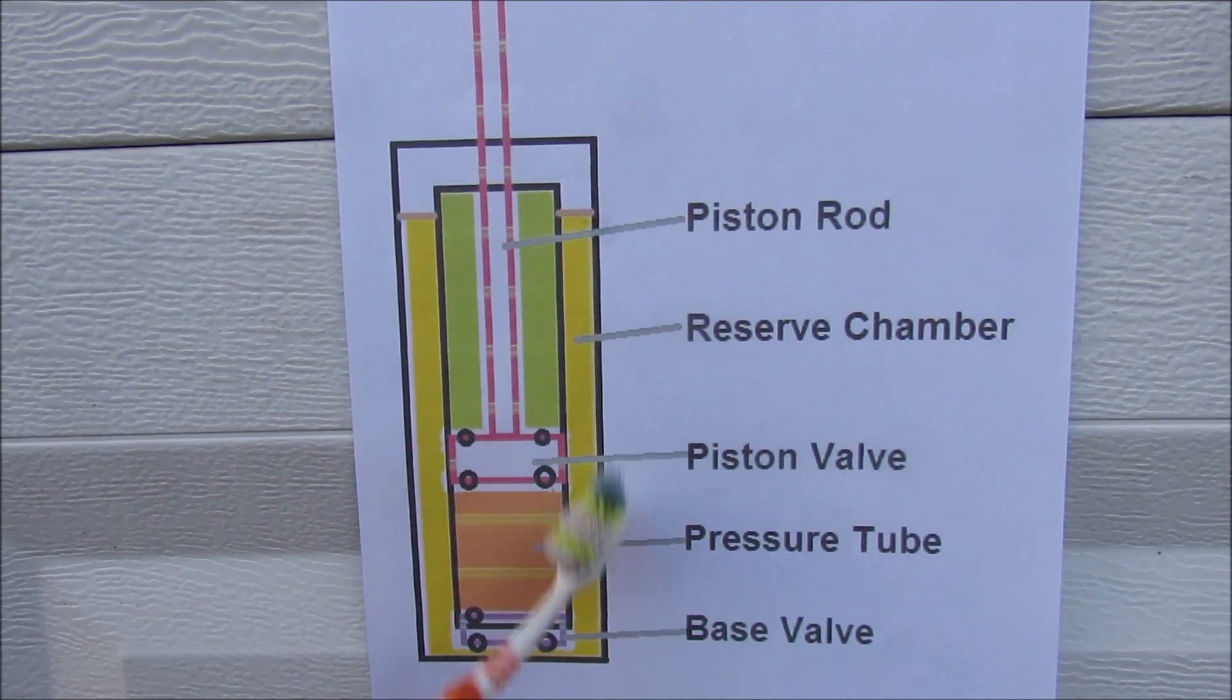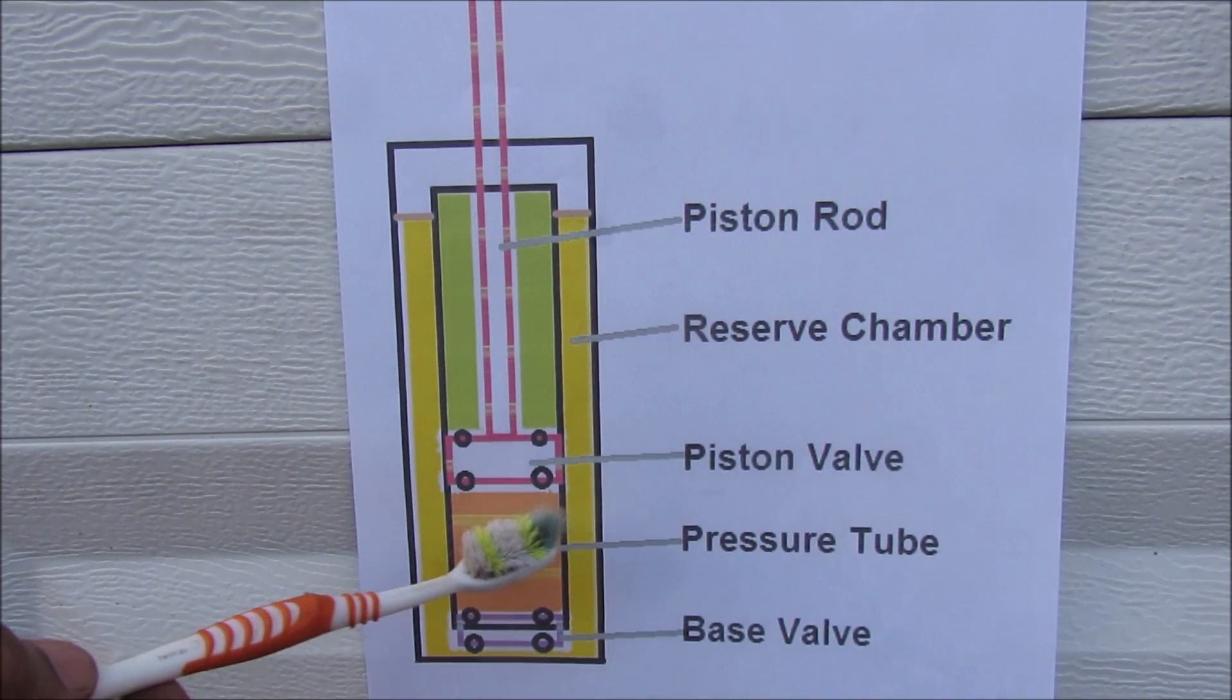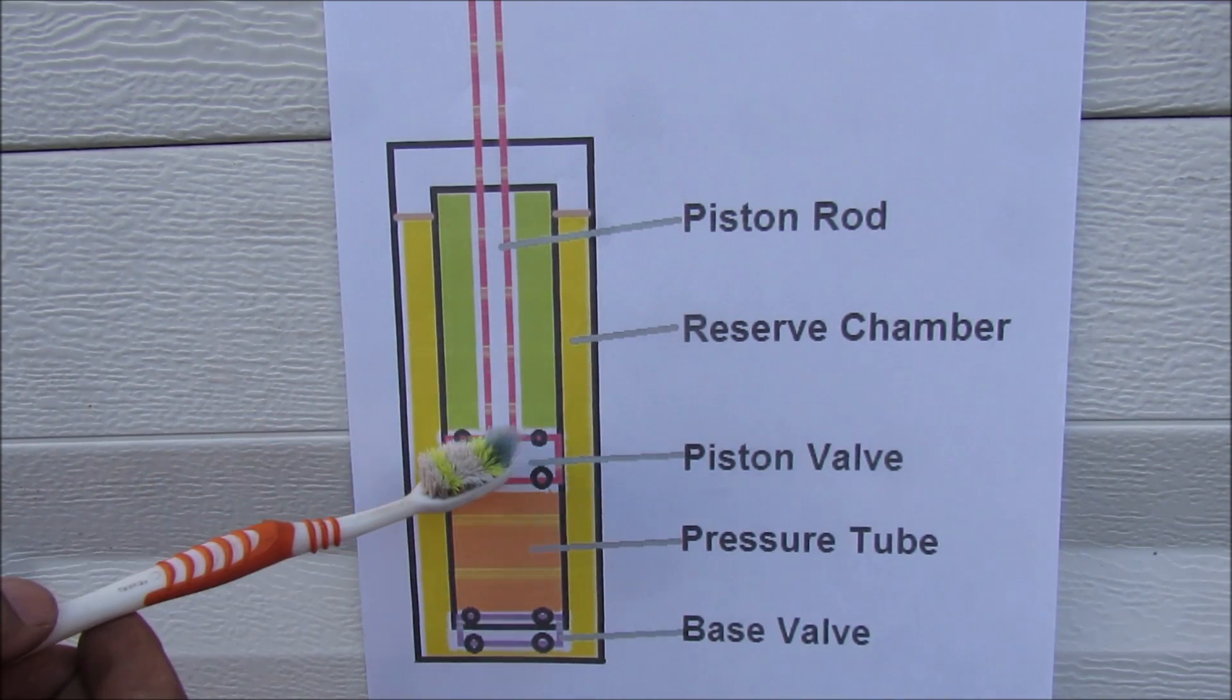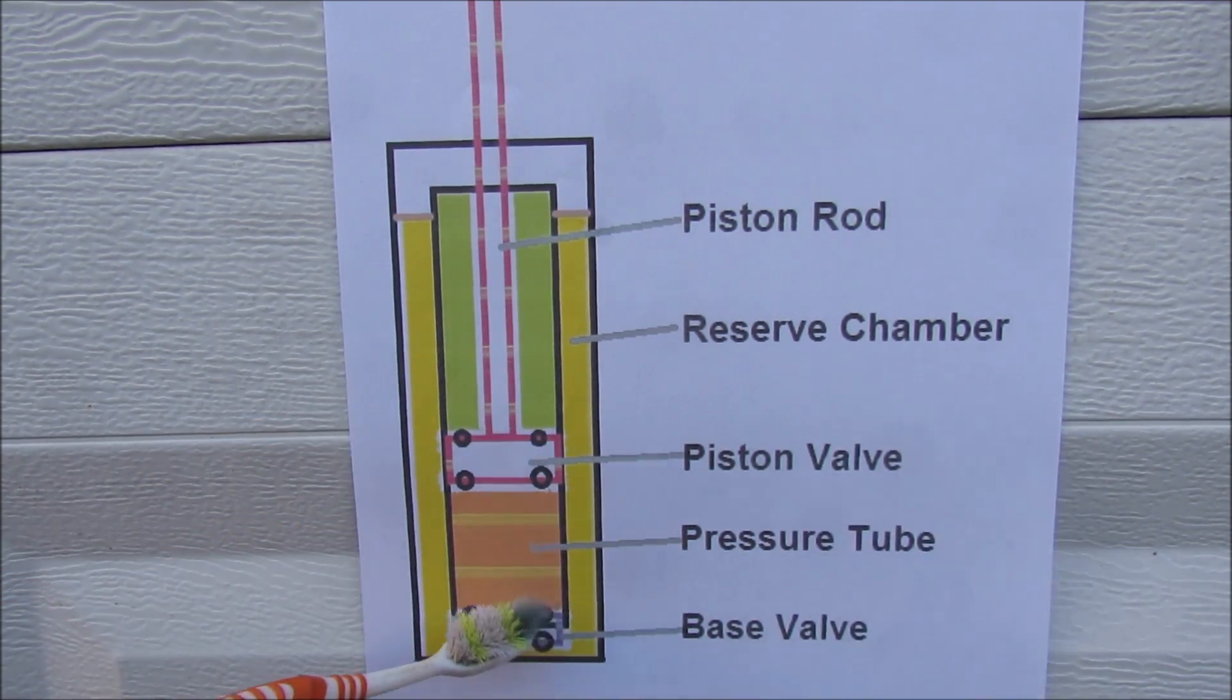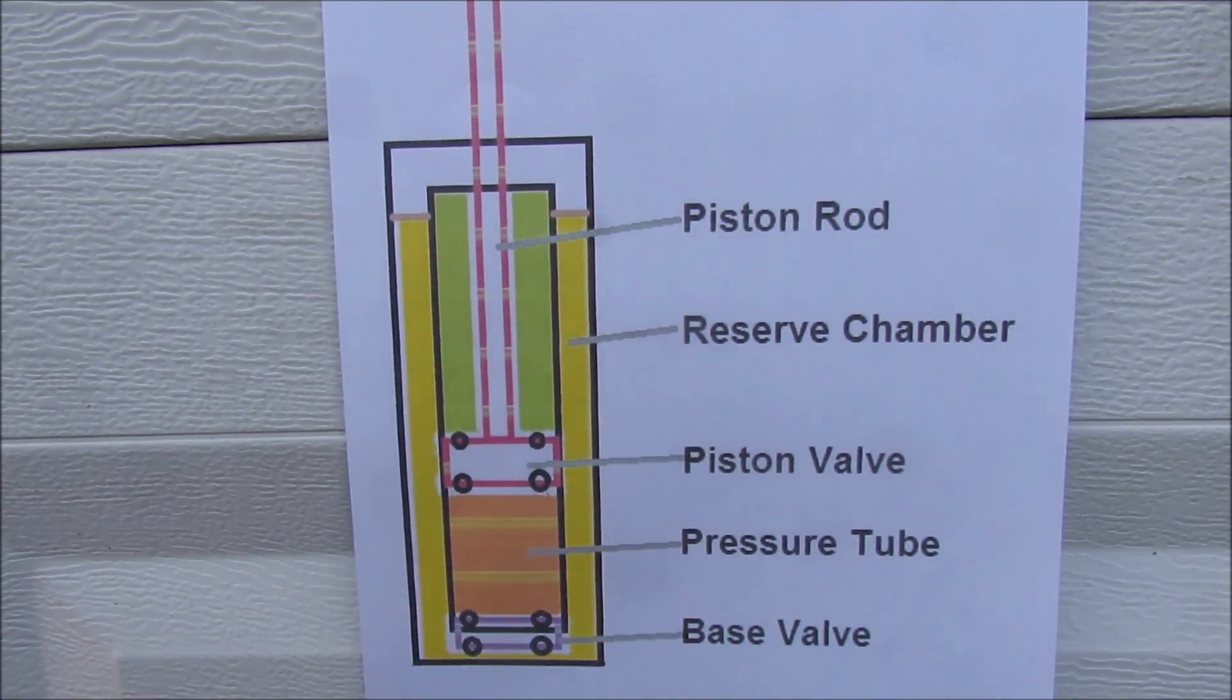On the outside we have a reserve chamber for the oil, and on the inside we have the pressure tube where all the action happens. On the tip of the piston separating these two chambers we have a valve, and then another valve at the bottom that separates the pressure tube from the reservoir.